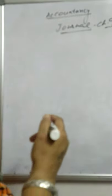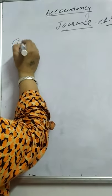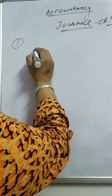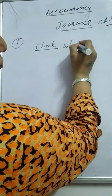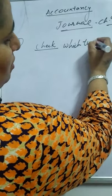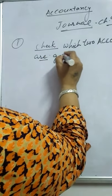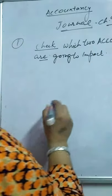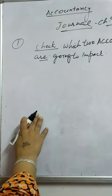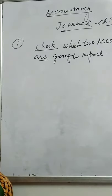While recording journal entry, we have to follow some rules. First of all, we will identify how many accounts are impacted by one transaction.